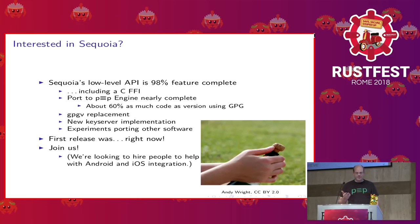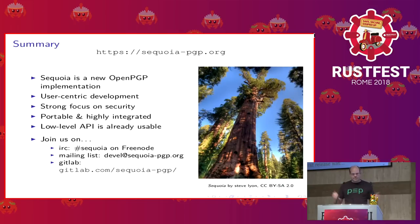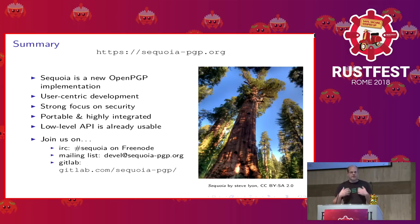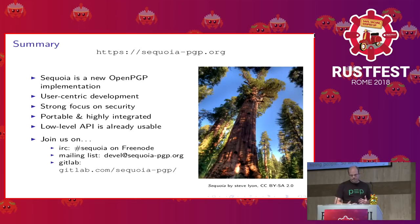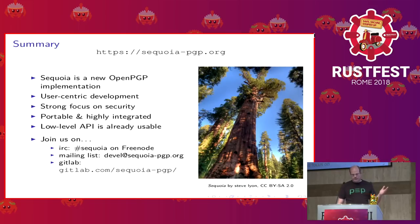If you're interested, you're welcome to join us. We're hiring people with Android and iOS experience, not just to do ports but to help with tighter integration in the future. Sequoia is a new, awesome OpenPGP implementation. Our focus is on user-centric development and a strong focus on security. We try to be really portable and highly integrated with the environment — using services the host OS provides, like the trusted enclave on iOS and systemd on Linux. Our low-level API is already very usable. You can add a dependency to sequoia-openpgp and integrate Sequoia into your project. We're on Freenode in the Sequoia channel, we have a mailing list, and you can find our source code on GitLab.